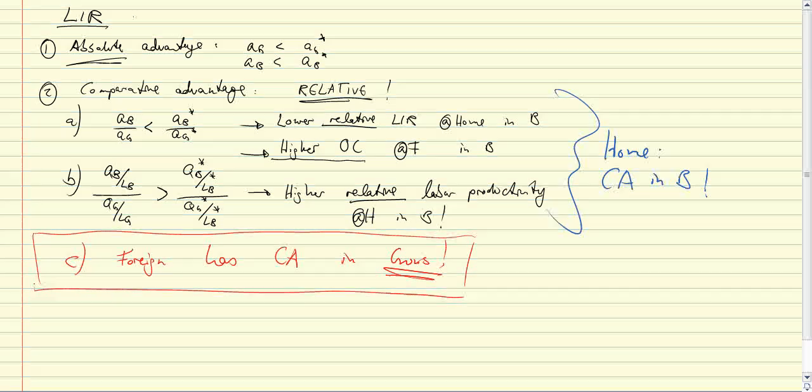And the fact that, in relative terms, both countries have advantages produces the gains from trade. So foreign can specialize in producing guns, and the home country can specialize in producing butter, and both countries can benefit from that. That's the idea of comparative advantage.